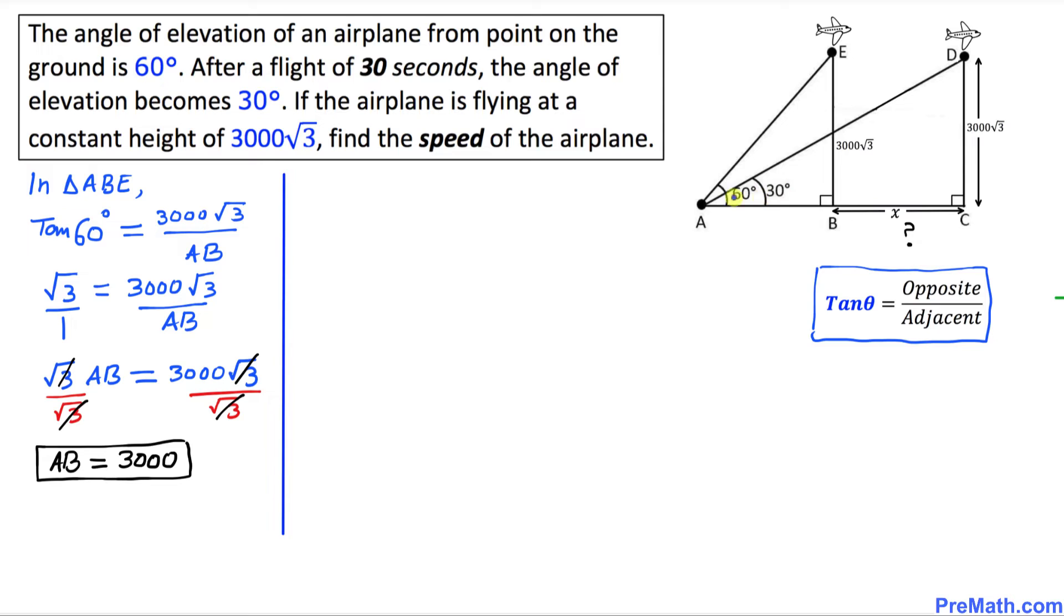In our next step, let's focus on the next right triangle. In this triangle we are talking about triangle ACD, so we are interested in tan(30°) equals to opposite over adjacent. In our case, opposite is 3000√3 divided by the adjacent, which is segment AC.